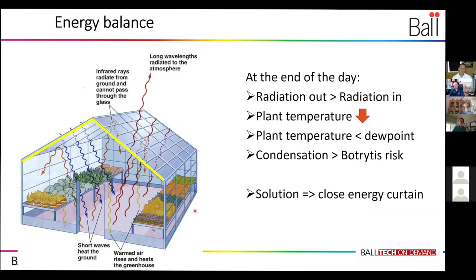And what you see is that these days growers close the energy curtain at the end of the day, and that's only when it's a clear sky. When it's a cloudy day the outgoing radiation is less, but they close the energy curtain to reduce the outgoing radiation and to avoid that they get condensation in their crops.